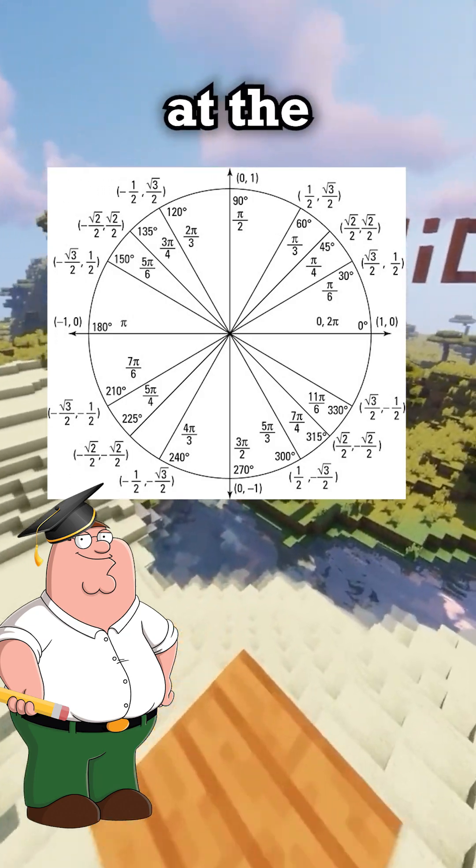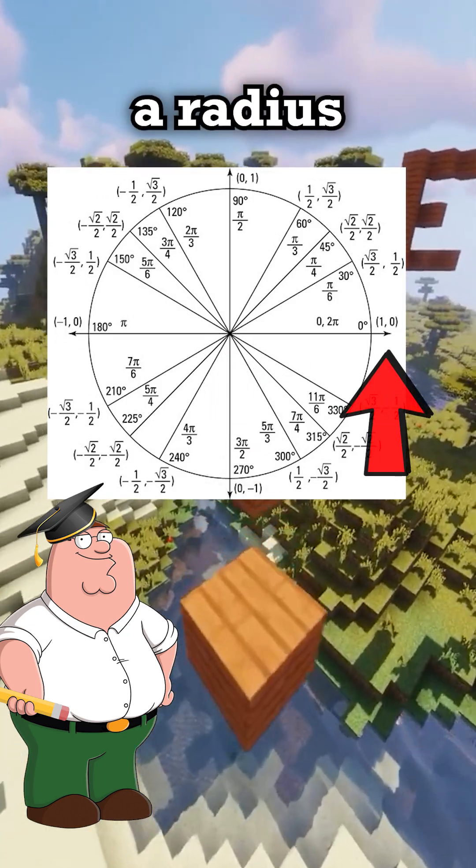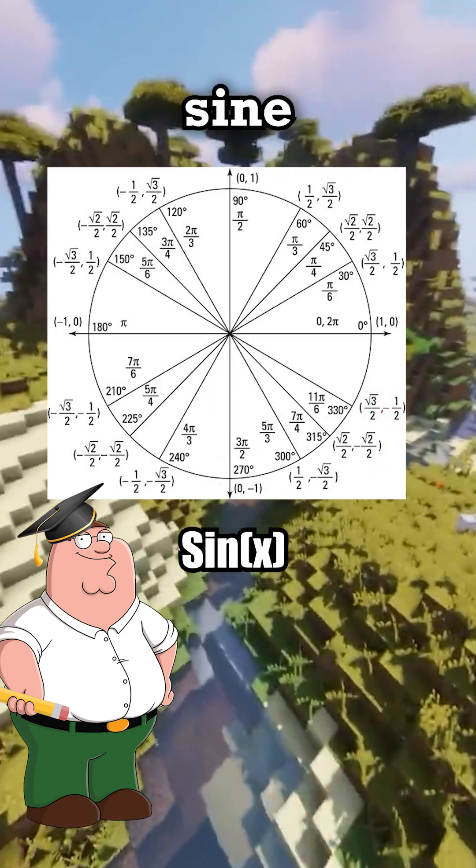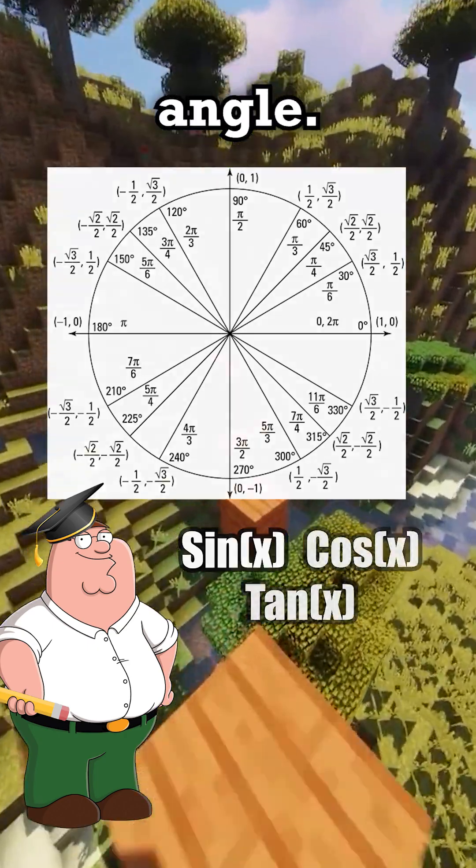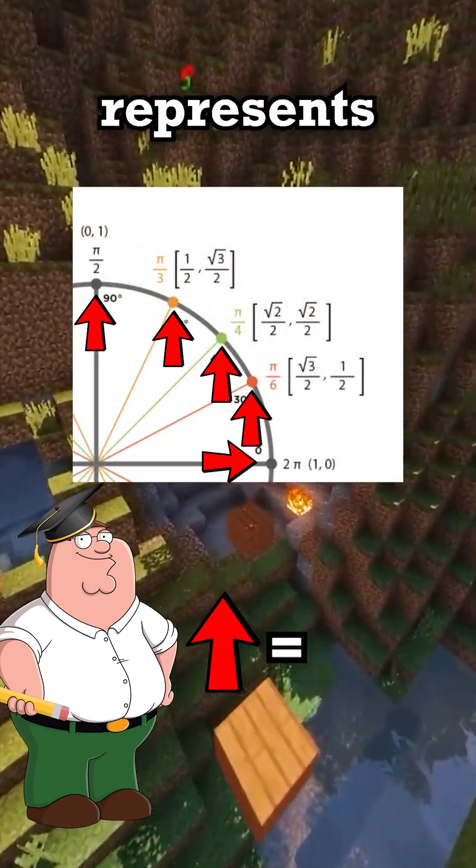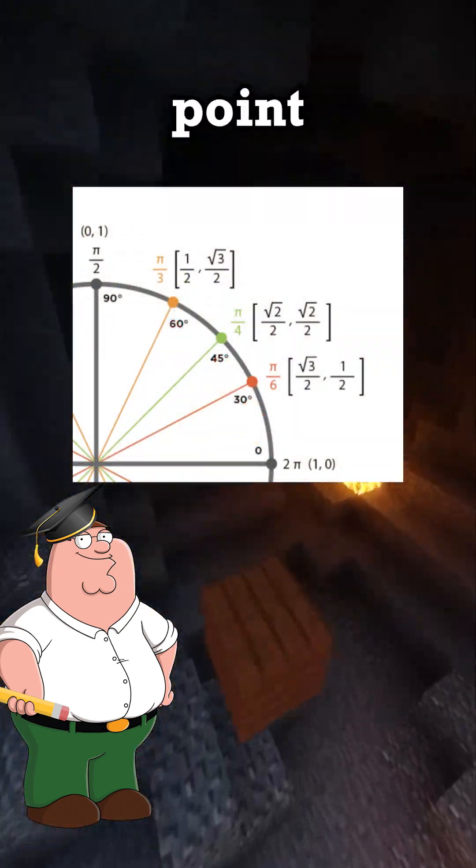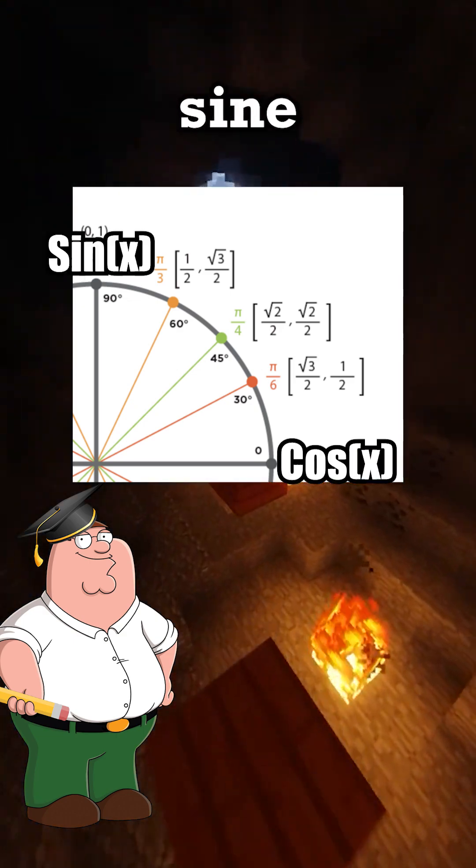The unit circle is a circle centered at the origin, zero, with a radius of one. It helps us define sine, cosine, and tangent for any angle. Every point on the circle represents an angle, and the coordinates of that point are cosine for the x and sine for the y.